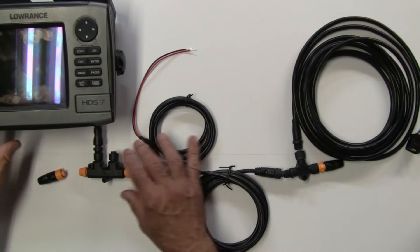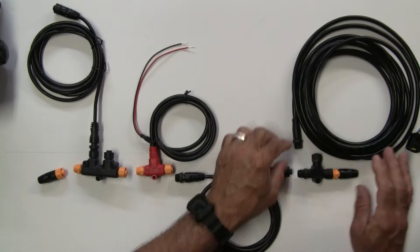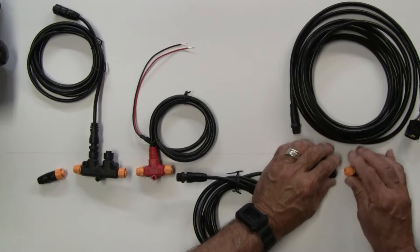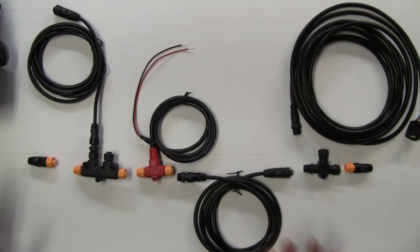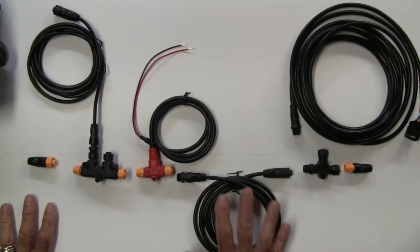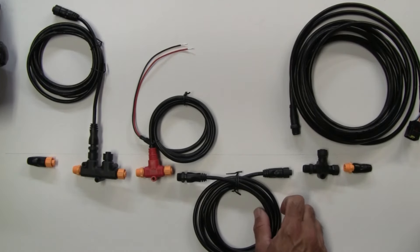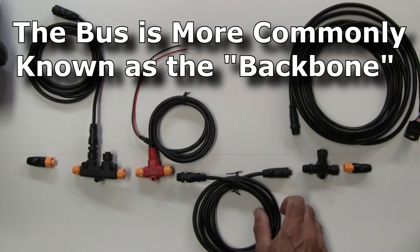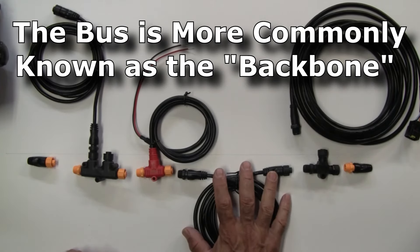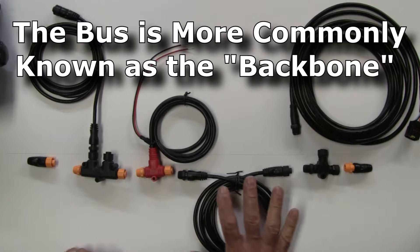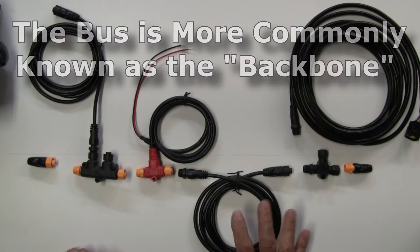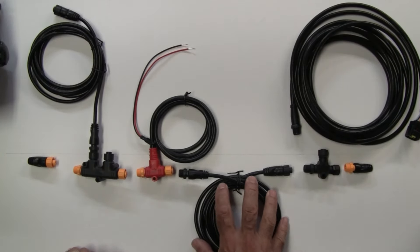Alright, so a couple of things that you want to be aware of when you have an NMEA 2k network. One of them is the bus itself. There's a bus cable, sometimes interchangeable with a drop cable, though there's some limitations. The bus cables are typically done so that they're waterproof and able to withstand conditions.